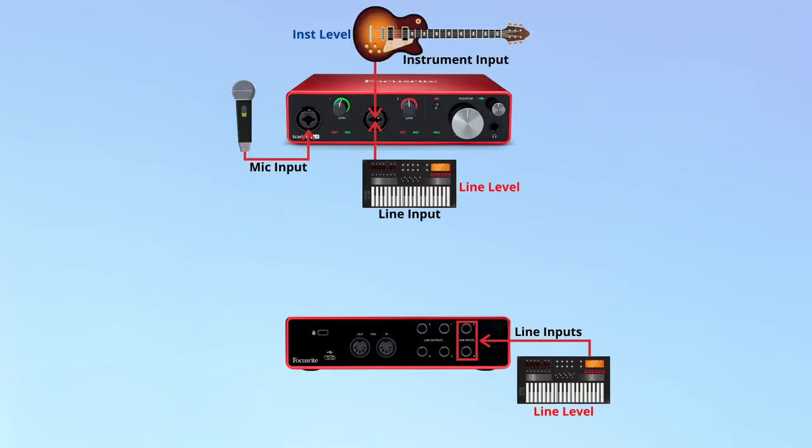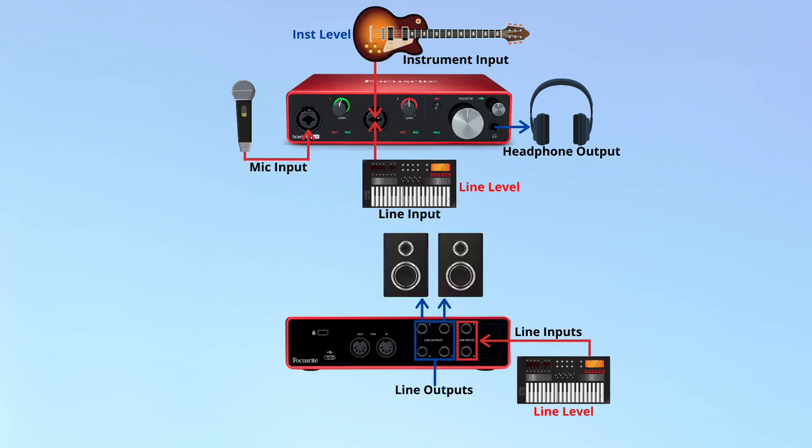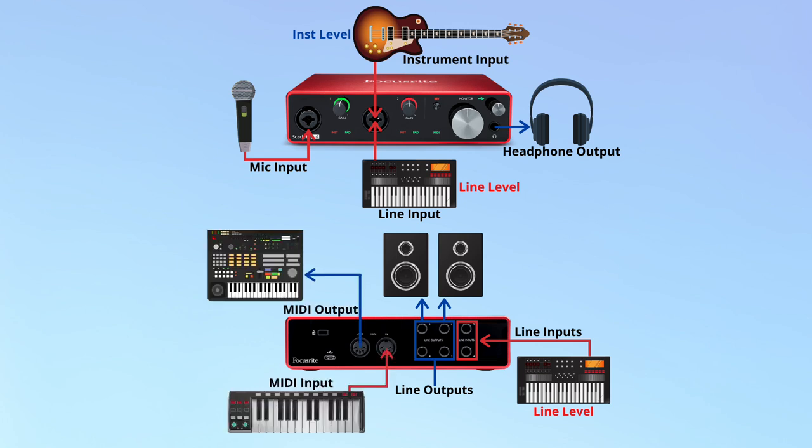That pretty much covers the most common inputs and outputs that you can find on modern day audio interfaces. As you can see there are a few different types, but when you break it down it's not that complicated. Having more inputs and outputs gives you more connectivity options, but when you're just starting out you probably only need the basics — your mic, instrument, and line inputs, a headphone output, line outputs for your studio monitors or other hardware, and you might want a MIDI input and output. S/PDIF and optical/ADAT you may want to use at a later stage, but there are plenty of options available. I've written an article on my website — there's a link down in the video description.